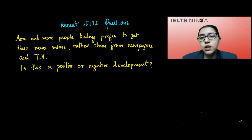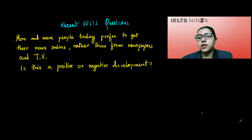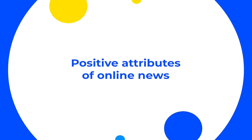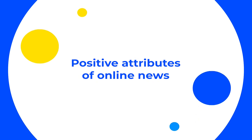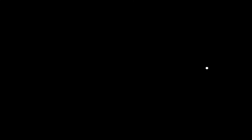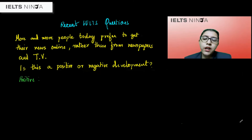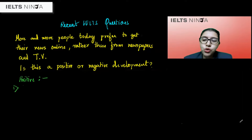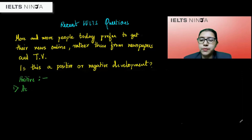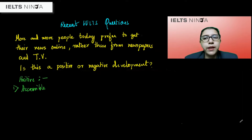Now let us look at what are the possible things that one could write if you were writing that this is a positive development. If I were going ahead with the stance that this is indeed a positive development, the first thing I would point out is that getting your news online is extremely convenient and therefore accessible. This accessibility is one of the flag-bearing traits of online media.